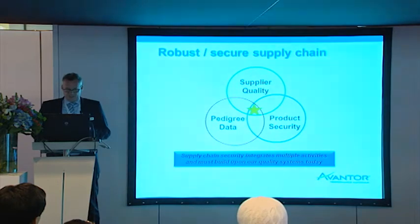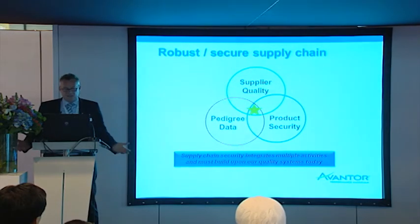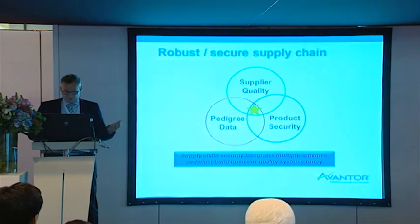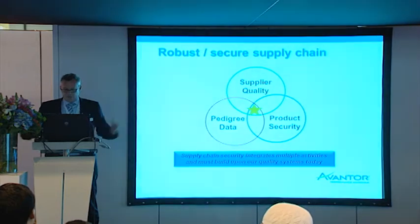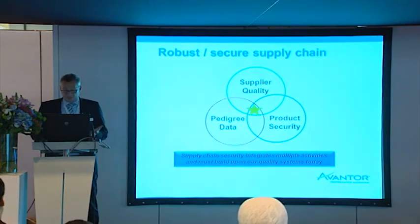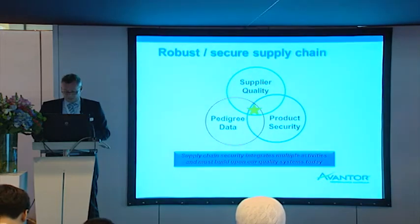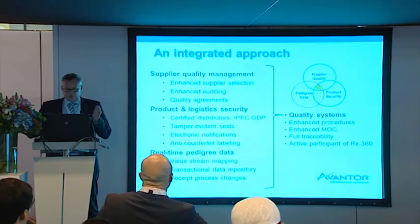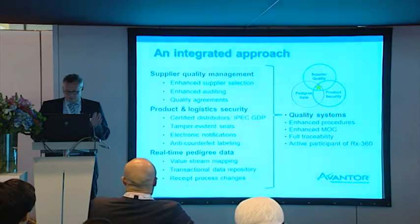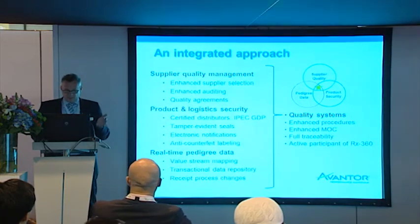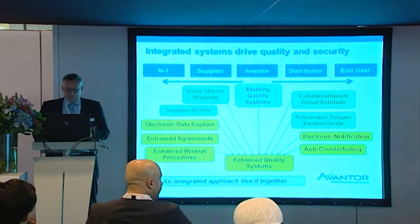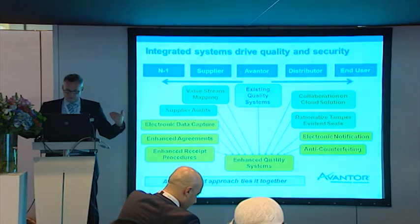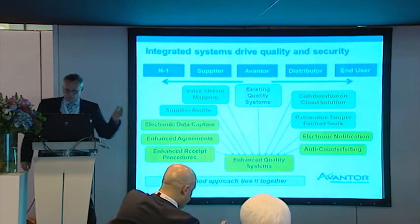How important it is to have an integrated view is clear when you look at supply quality, product security, and pedigree data — the historical data. Supply chain security integrates multiple activities and must build on our quality systems today. Avantor is not only looking at the product quality, but has an internal view of the supplier and even beyond the supplier.